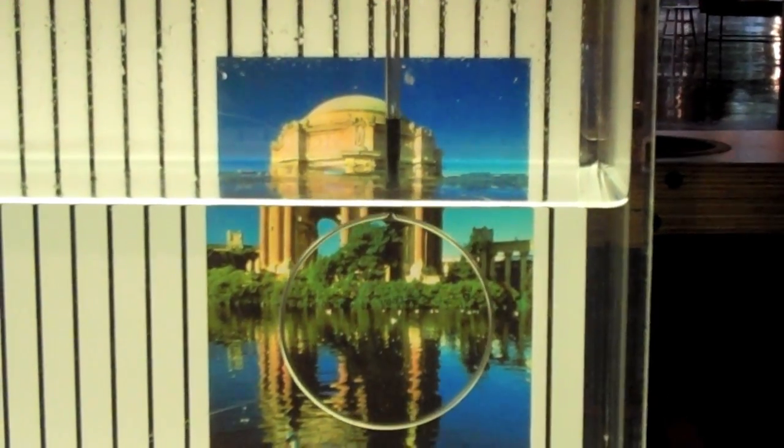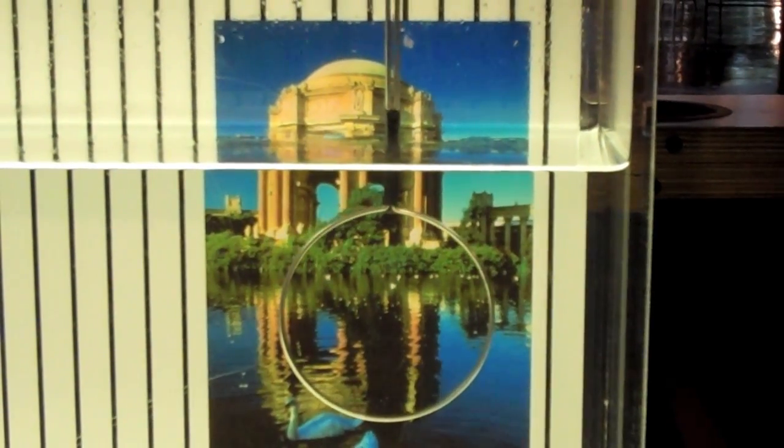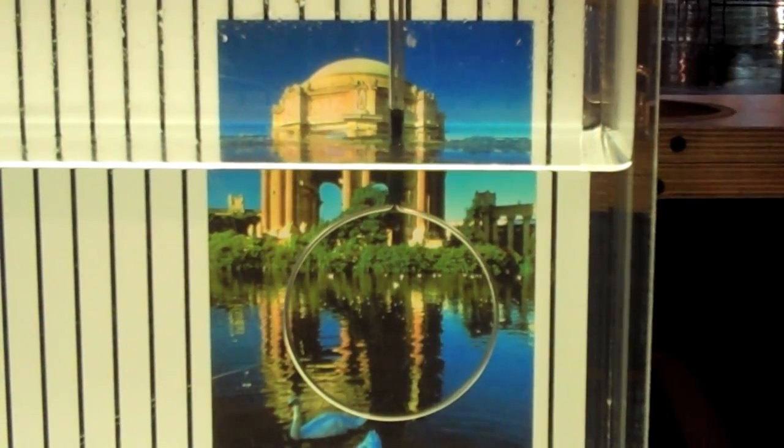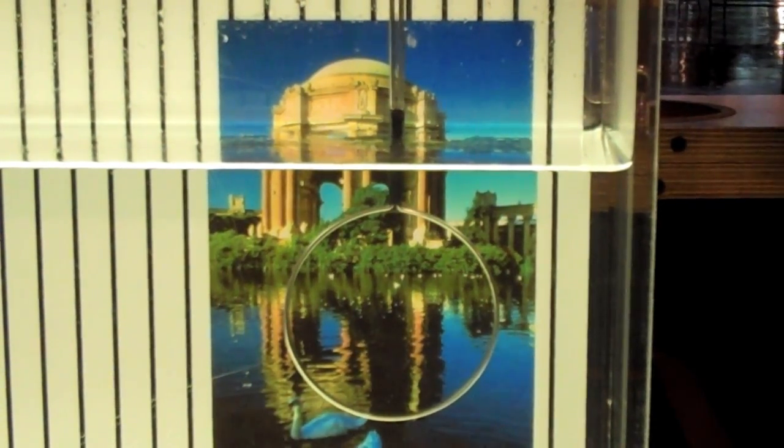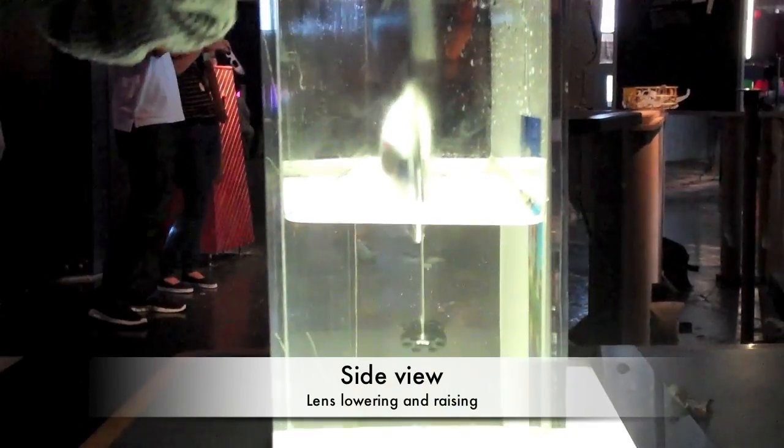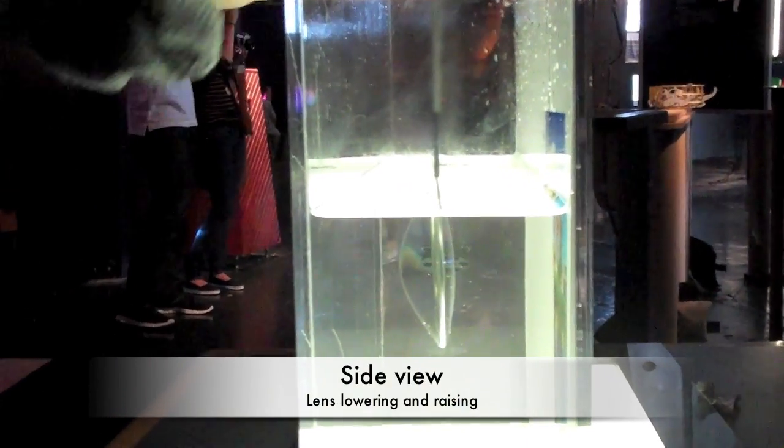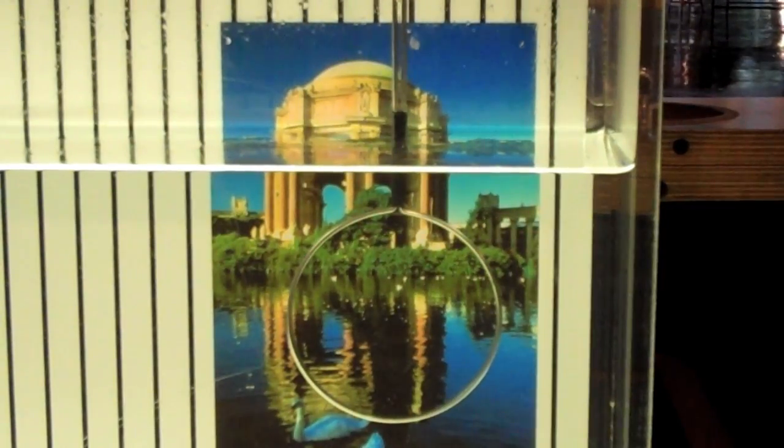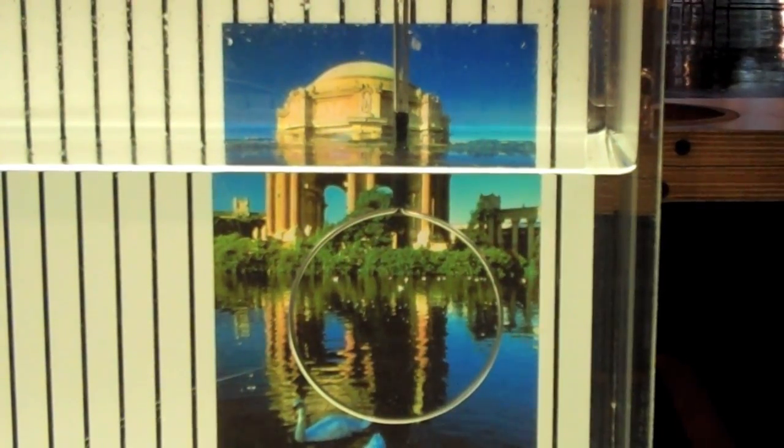Now the lens is submerged in the oil and the light is going through the oil, then through the glass, then back out into the oil. As it does that, you can see that the image is no longer distorted. That tells us again that the light isn't bending. It isn't changing its speed as it goes from the oil into the glass and then back out into the oil.